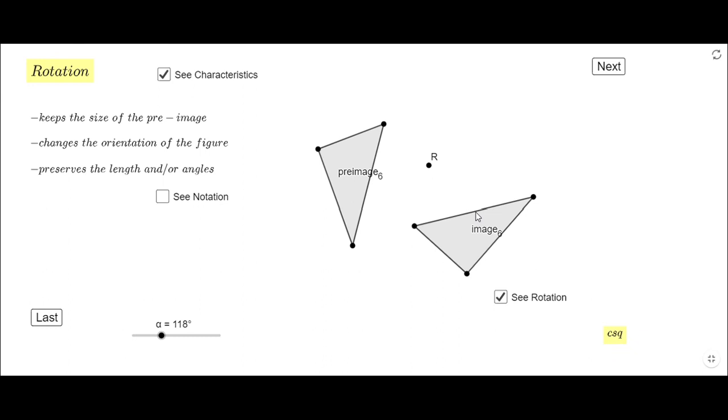Characteristics: it keeps the same size, it doesn't change the size of the triangle in this case. It changes the orientation of the figure, you notice, and it preserves the lengths and the angles. Notation similar to reflection: be careful you can see capital R or small r, and this tells you the degrees you rotate and rotate around what point. In this case point O, or in the picture I have the point R. And a verbal way: rotate a number of degrees, in this case 110, around point O.